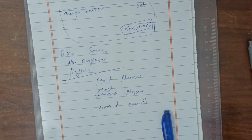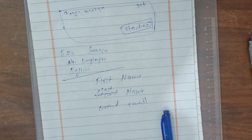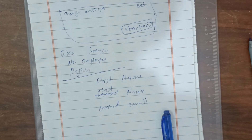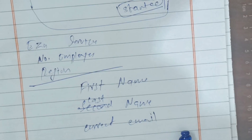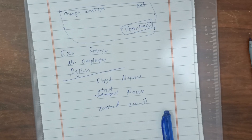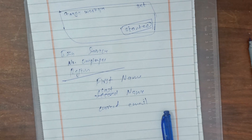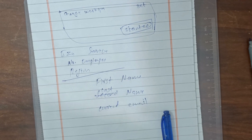Then click the Next button again. They will ask whether your business has a domain — like a website. If you don't have a website, click 'No, I need one.' If you already have one, click 'Yes, I have one I can use.'